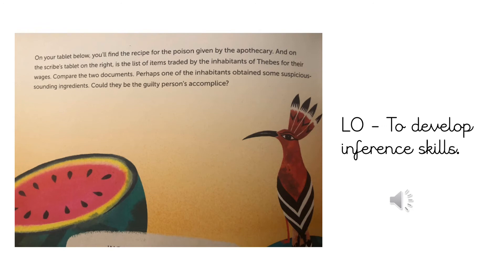On your tablet below you'll find the recipe for the poison given to the apothecary, and on the scribe's tablet on the right is the list of items traded by the inhabitants of Thebes for their wages. Compare the two documents — perhaps one of the inhabitants obtained some suspicious-sounding ingredients. Could they be the guilty person's accomplice? They will come up on the next couple of slides.